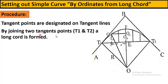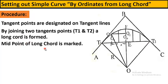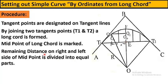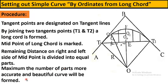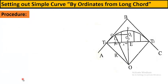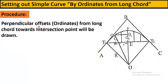The second step is: by joining the two tangent points T1 and T2, a straight line called the long chord is formed. The midpoint of the long chord is then marked — that is, the half of the long chord. The remaining distances, L divided by 2 on the right side and left side of the mid-ordinate, are divided into equal parts at distance X from the midpoint of the long chord.